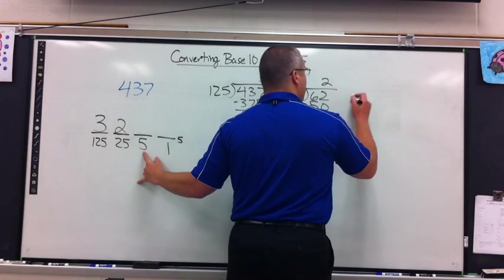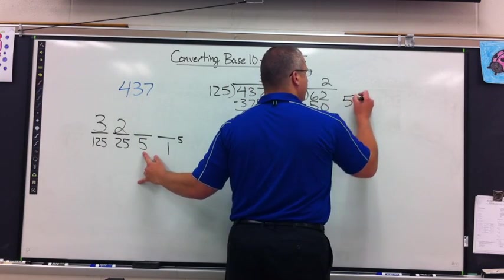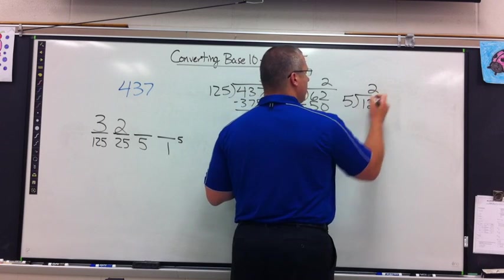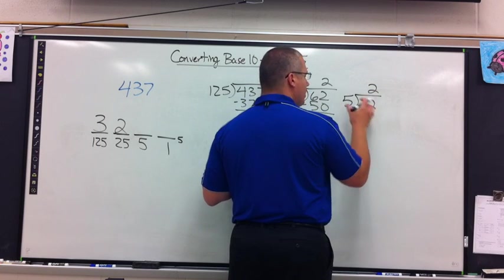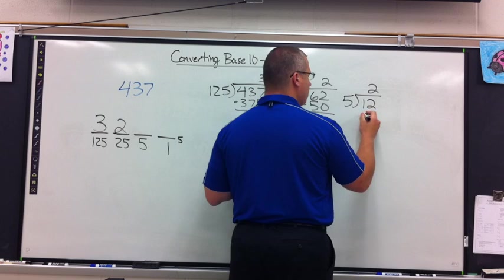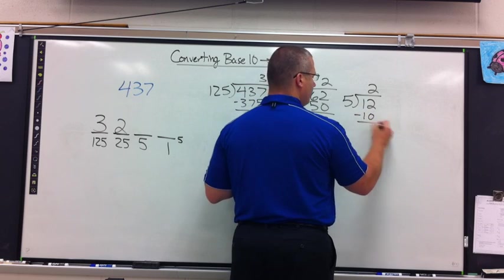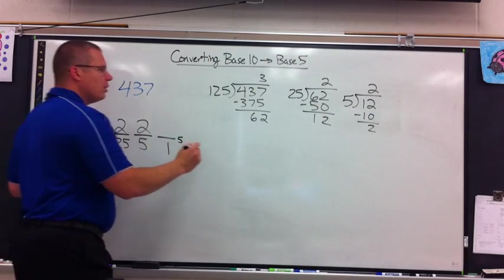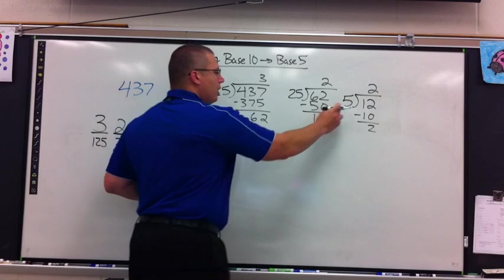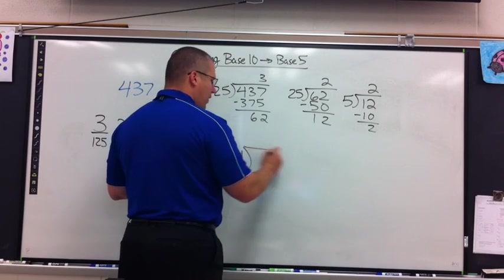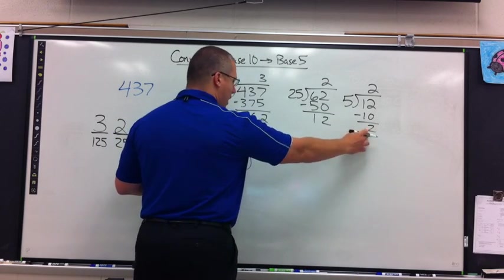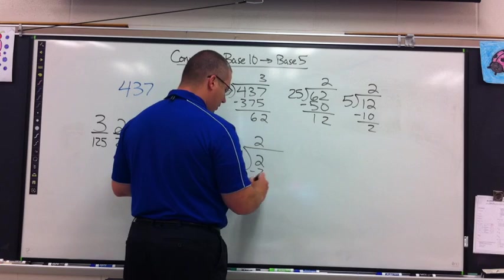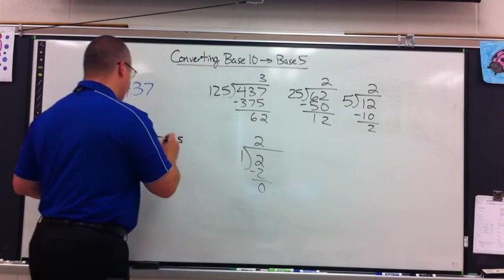The next place value is how many 5s. I have 12 left over. I know it's simple division — we'll write it out to show the process. And I get 2.